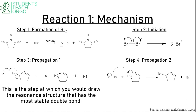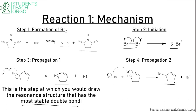Let's do a brief review of the mechanism. The first step is forming Br2, giving Br2 and a byproduct. The second step is initiation: Br2 forms Br radical. The third step is propagation — this is where you draw the most stable resonance structure, or in this case the most stable double bond position, and do any rearrangements. Step four is a second propagation step where you add your bromine to get the final product.